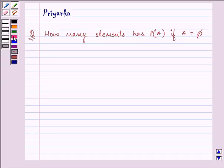Right, so let us start with our solution. Now, we are given that A is equal to phi and we need to find P of A. So, power set is a set containing all possible subsets.